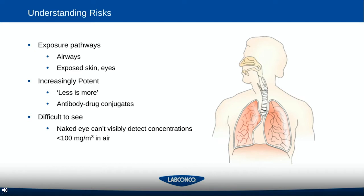Another thing to consider with potency is that while in high volumes APIs can be easy to see, small granules and powders can easily aerosolize and be quite difficult for a user with normal vision to detect. In fact, users with good 20/20 vision have difficulty seeing any concentration of powder in the air above 100 milligrams per cubic meter. As a result, people can be working with potent drugs that have an OEL well below this value and not know they are being actively exposed.